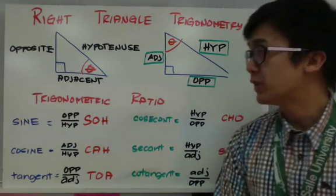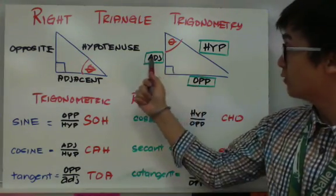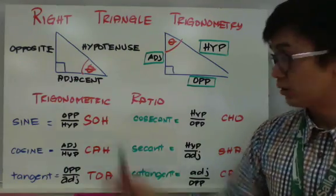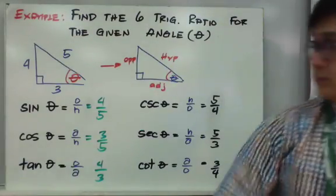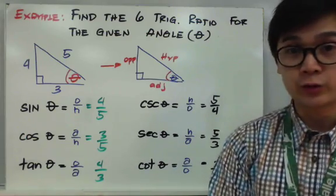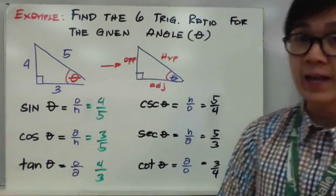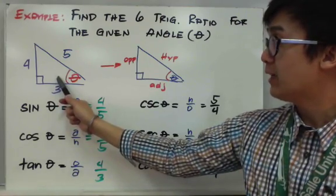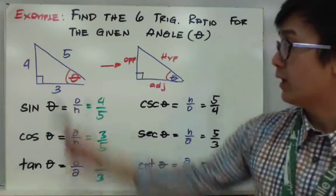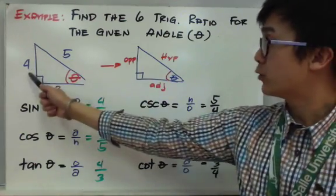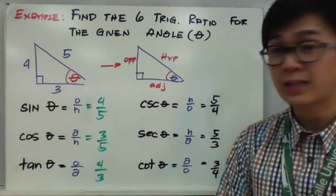Ano-ano ba yung mga problems ng trigonometry na pwede nating gamitan yan? Halimbawa, meron tayong triangle at kailangan natin mag-solve ng side ng given triangle, given two sides and one angle. Makukuha natin yung answer using this formula. So, ito yung example kung saan gagamitin natin yung SOHCAHTOA. Ang given problem is to find the 6 trig ratios for the given angle. Ito yung triangle na gagamitin natin, at ito yung given angle. Ang unang step is kailangan alam nyo yung mga parts ng triangle associated dun sa mga numbers na given — yung 5 is the hypotenuse, yung 4 is your opposite side, and 3 will be your adjacent side.